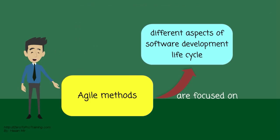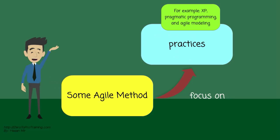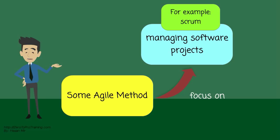Agile methods are focused on different aspects of the software development life cycle. Some focus on the practices. For example, XP, Pragmatic Programming, and Agile Modeling.